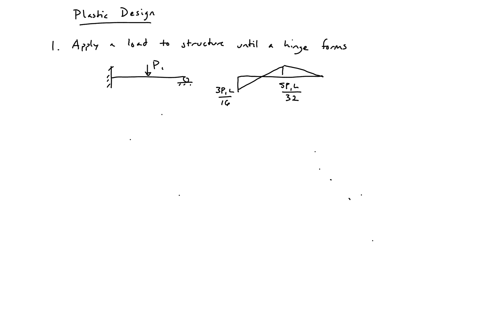What we'll do is apply a load P1 until our moment at the end equals our plastic moment. We can then solve for P1. At this point we're going to have a hinge form.